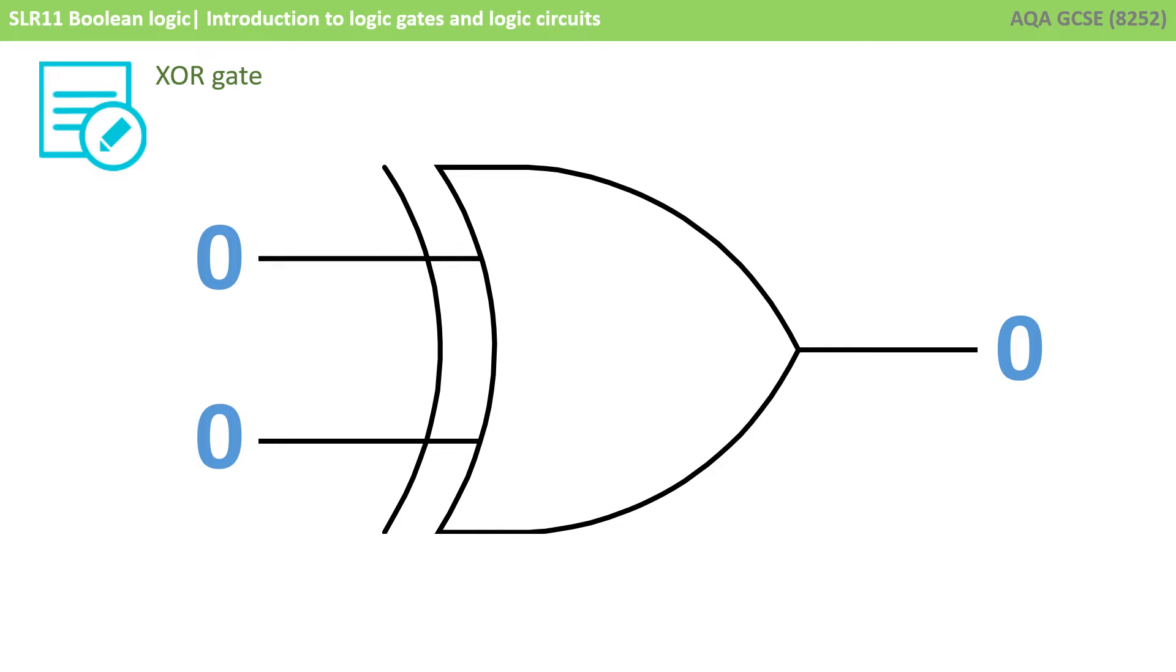Finally, we have the XOR gate, which is known as the exclusive OR gate. Now this is similar in many ways to the OR gate, so you need to make sure you don't get confused in the exam. Just like a normal OR gate, if both inputs are 0, the output is 0.